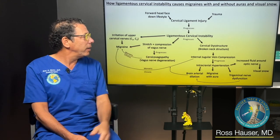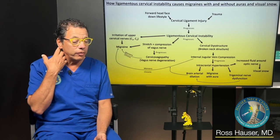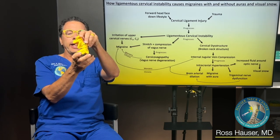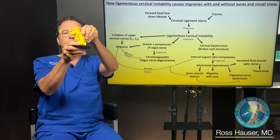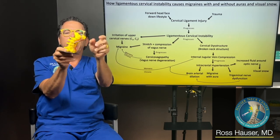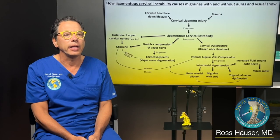As you can see in the illustration, when you have a forward head, face-down lifestyle, or you get into a car accident or have trauma in your neck, the neck curve — instead of being lordotic — ends up going the wrong way. That crowds the front of the neck. The ligamentous cervical instability causes stretch and compression of the vagus nerve, which can cause vagus nerve degeneration. The combination of that can lead to migraines.